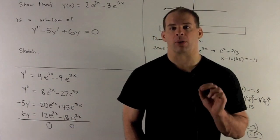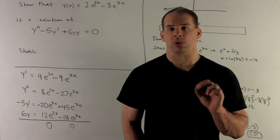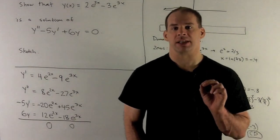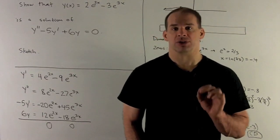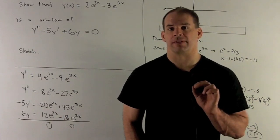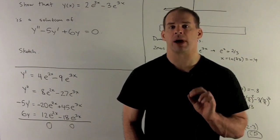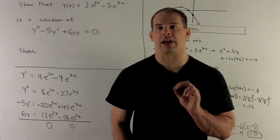So first, y'. The main trick we'll use here: derivative of e to a function is just e to that function times the derivative of the function. That's just the chain rule. Now, if I have e^(2x), its derivative is just 2e^(2x). e^(3x), its derivative is 3e^(3x).